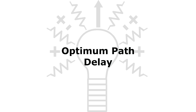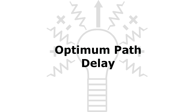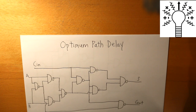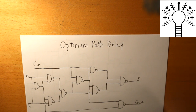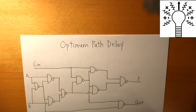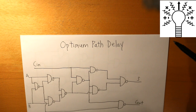In today's video we are going to be discussing about optimum path delay, and we are going to use a full adder to calculate the path delay of a circuit, so we are using the full adder as an example.